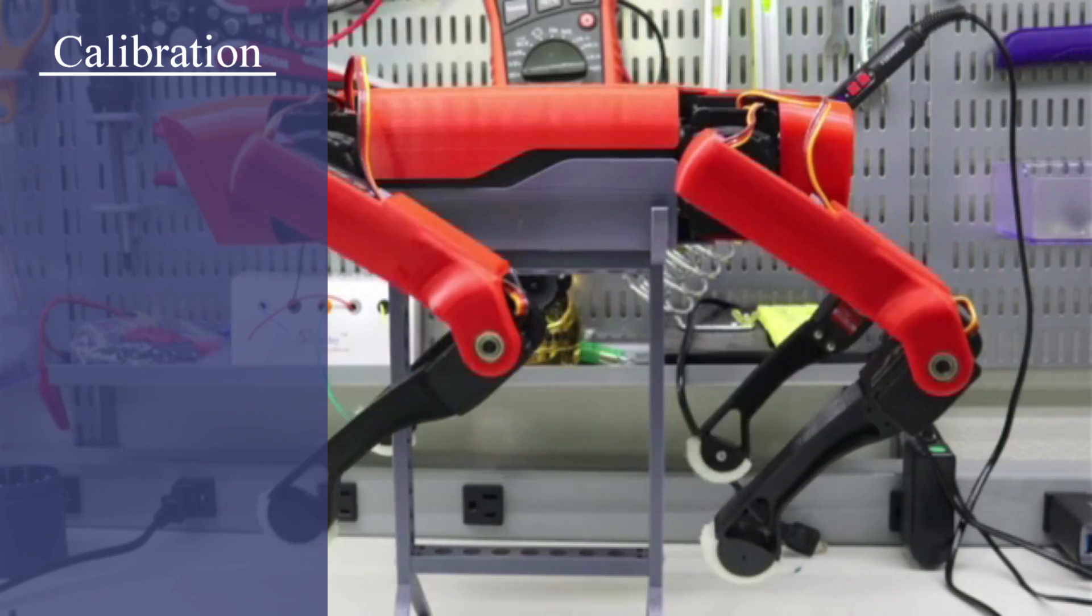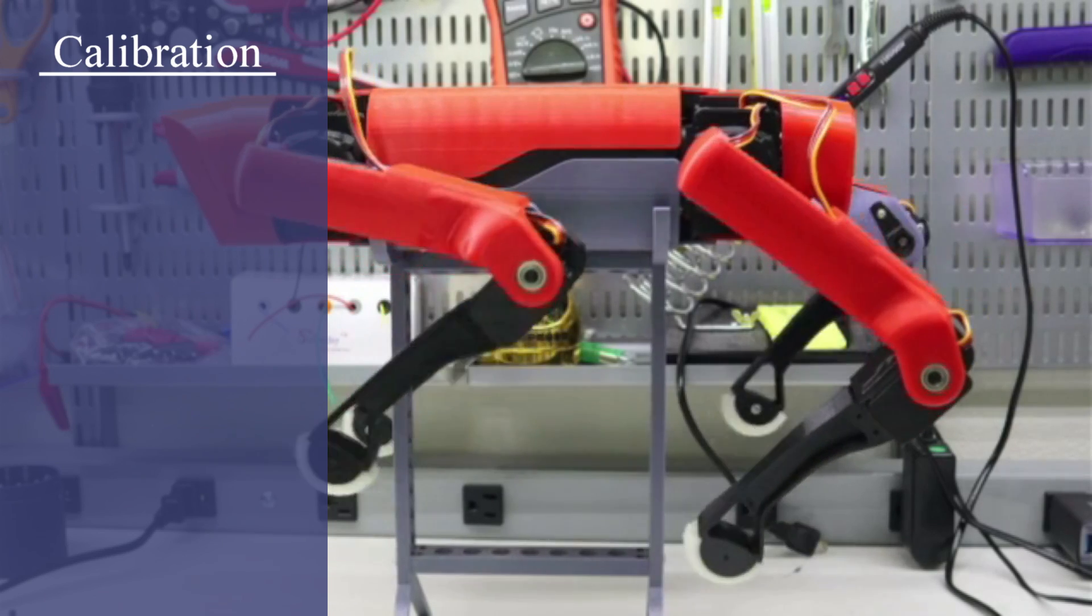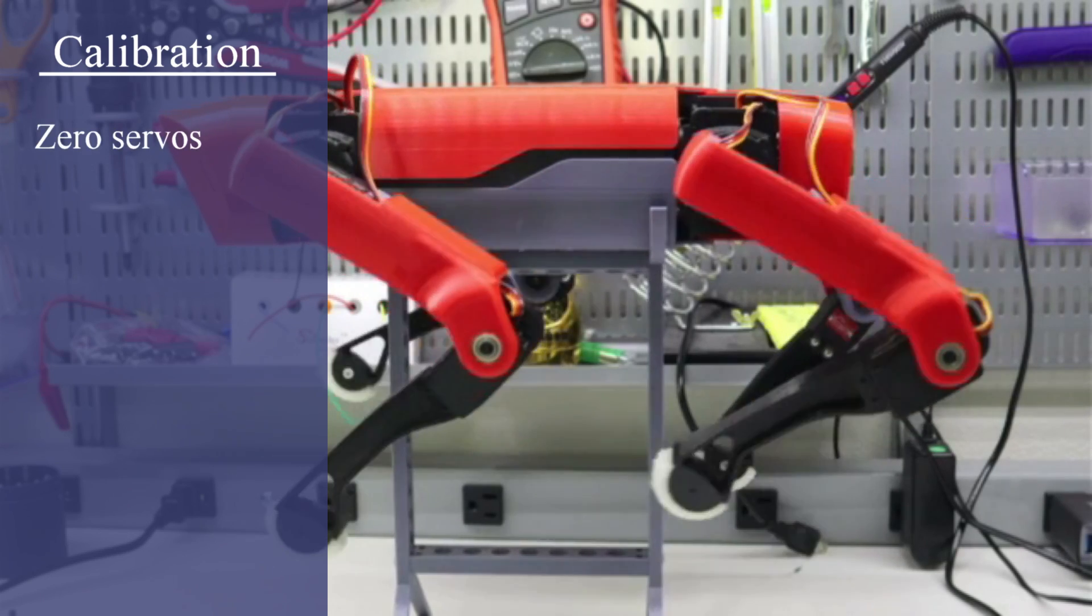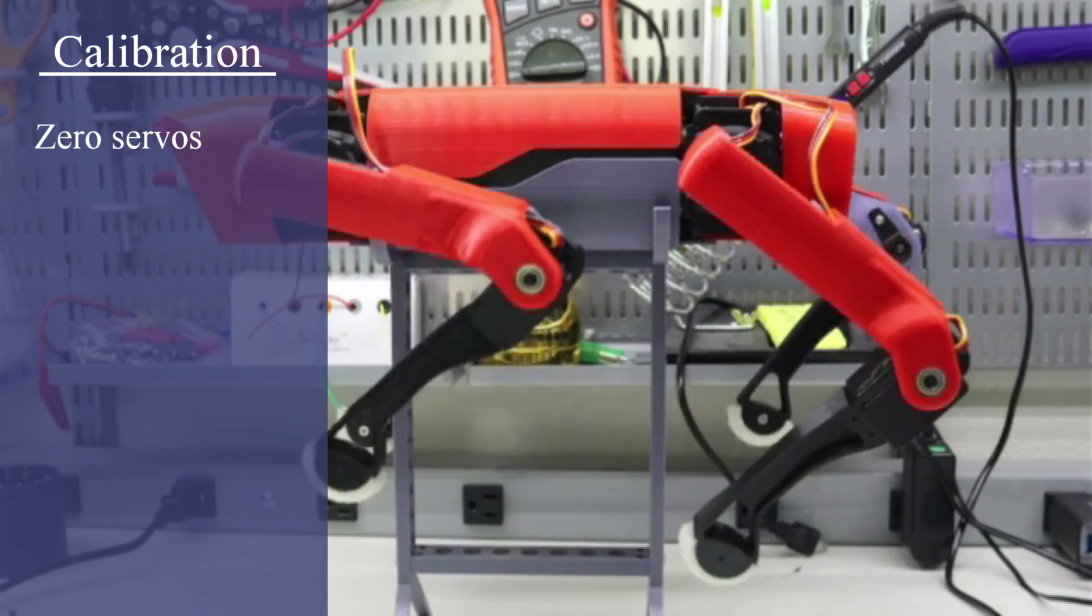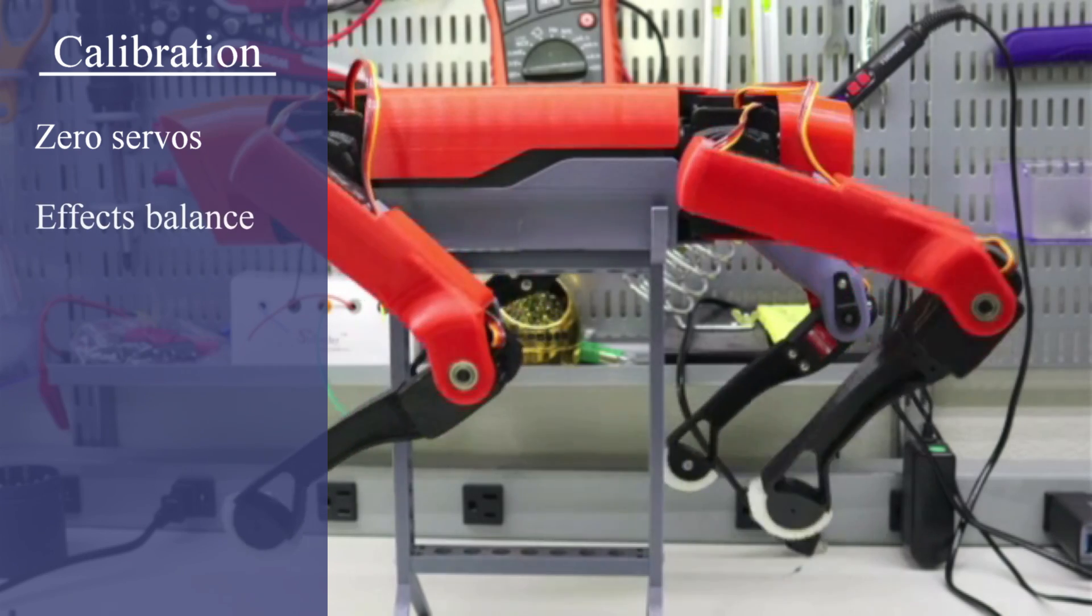Care has to be taken to properly calibrate the robot. This involves manually zeroing each servo. This topic was covered more in depth in the previous video. Having properly calibrated servos can help maintain balance.